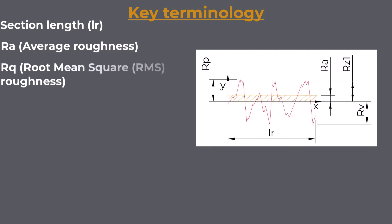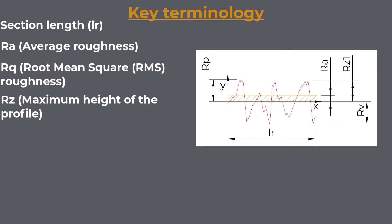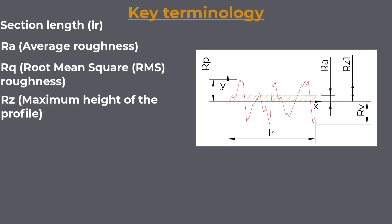RA is one of the most commonly used parameters to describe surface roughness; it provides a general sense of the surface's overall roughness but doesn't capture peak-to-valley extremes. RQ — Root Mean Square (RMS) Roughness: The square root of the arithmetic mean of the squares of the profile height deviations from the mean line, measured within the section length. RQ is similar to RA but gives more weight to extreme values, making it particularly relevant in applications where wear or fatigue is a concern. RZ — Maximum height of the profile: The average difference between the five highest peaks and the five lowest valleys in the profile, providing a measure of the extremes of the surface texture.